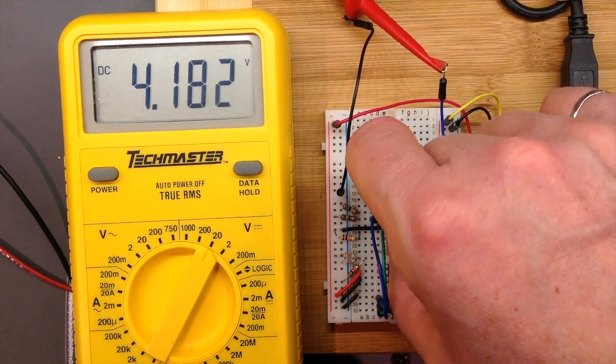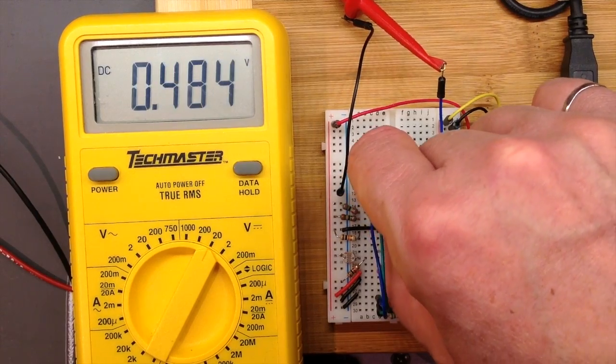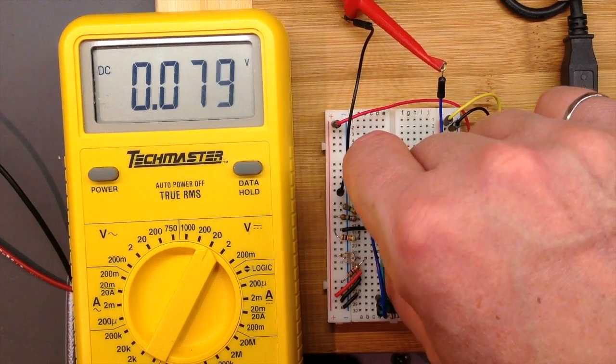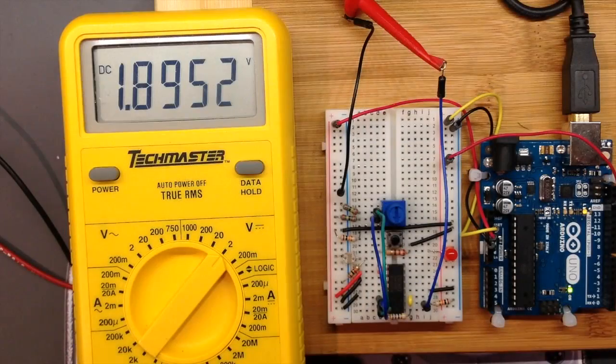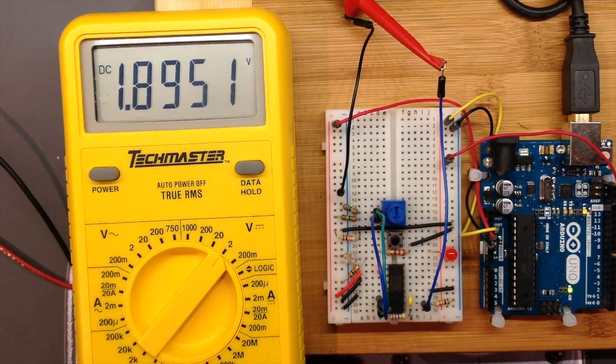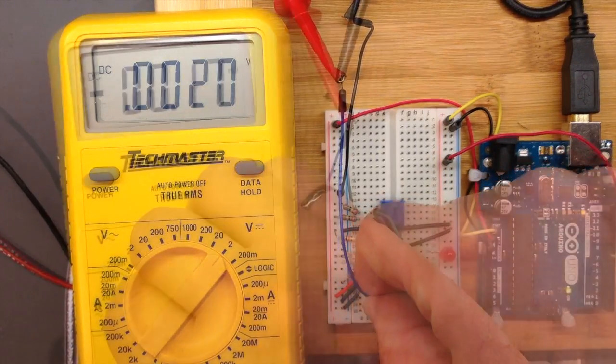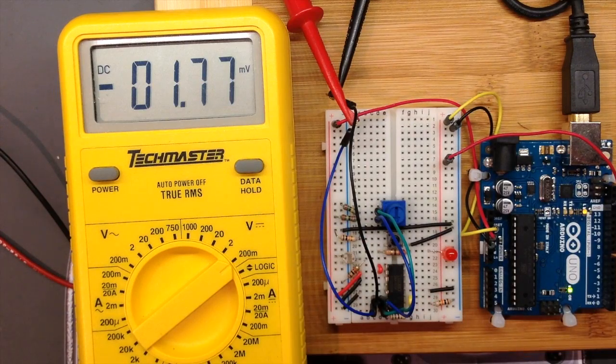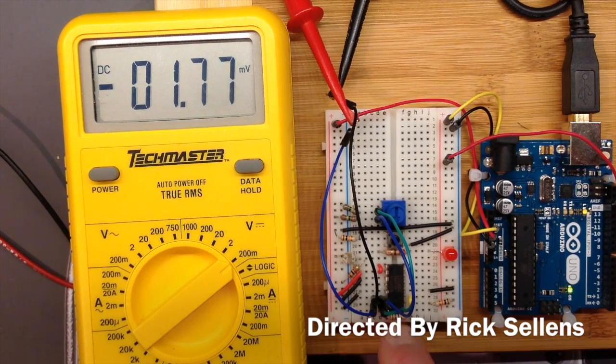If I dial that back down, eventually I get down to the range where I'm getting smaller voltage outputs. An output of 1.9 volts, roughly, corresponds to an input. There we go, about 1.78 millivolts. So we're seeing a very large increase, a very large gain, which is what we'd expect with this small resistance value here.